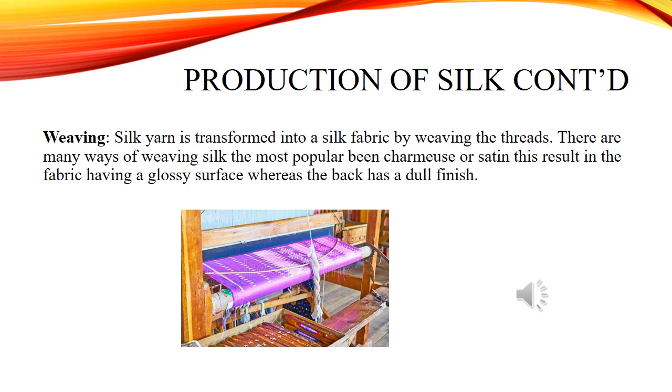There are many ways of weaving silk. The most popular is charmeuse or satin, which results in the fabric having a glossy surface whereas the back has a dull finish.